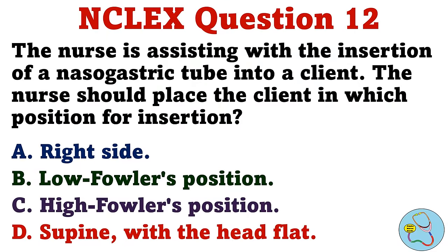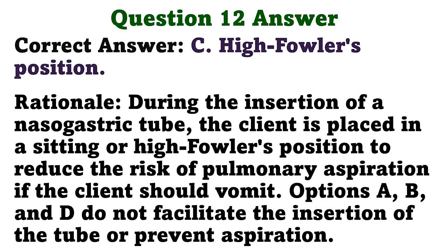The nurse is assisting with the insertion of a nasogastric tube into a client. The nurse should place the client in which position for insertion? A. Right-side. B. Low Fowler's position. C. High Fowler's position. D. Supine with the head flat. The correct answer is C: High Fowler's position. During the insertion of a nasogastric tube, the client is placed in a sitting or High Fowler's position to reduce the risk of pulmonary aspiration if the client should vomit. Options A, B, and D do not facilitate the insertion of the tube or prevent aspiration.